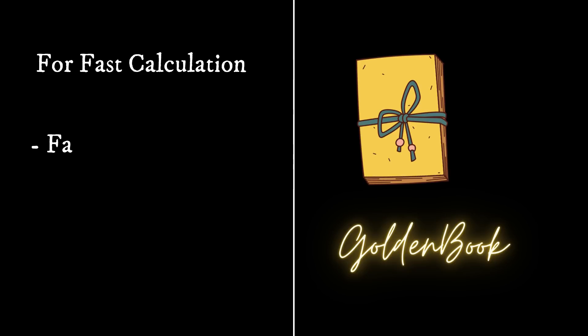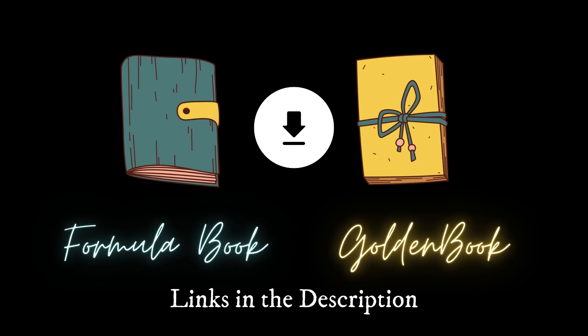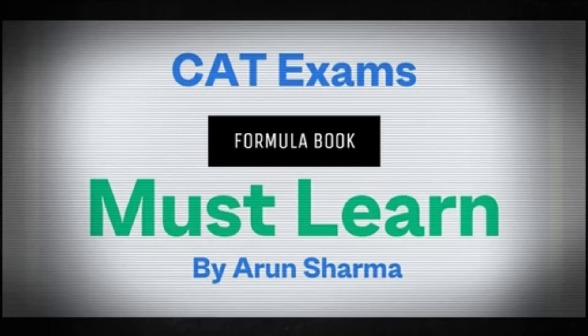A golden book contains things that make your calculation faster — for example, factorials, squares, cubes, or anything like that. I have shared a link to both the formula book and the golden book in the description of this video. I have also linked Arun Sharma's formula book for your reference, which we got in a barter a couple of months back. Go through these and you will get an idea of how these books are to be created.